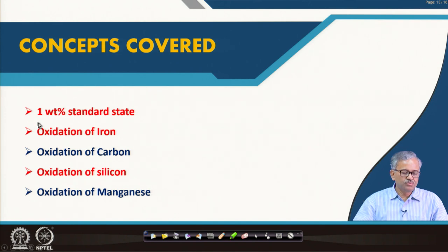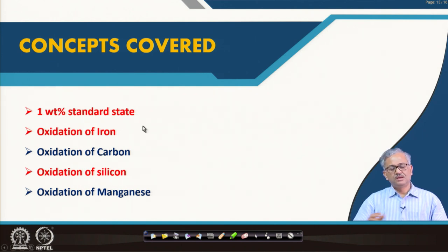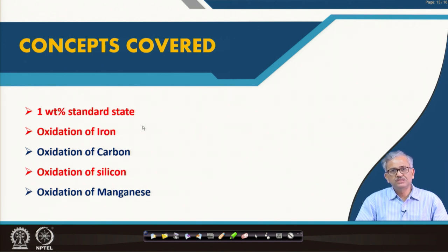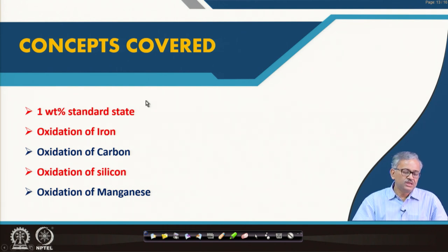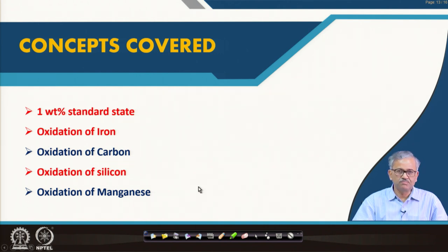The first concept to be covered is the 1 weight percent standard state. When considering reaction equilibrium in liquid steel, the impurity percentage hardly exceeds 1 weight percent. Most impurities are within 1 weight percent, so it is a very dilute solution. If we express the activity of impurities with respect to pure solid at the standard state, the activity value becomes very small, of the order of 10 to the minus 3 or minus 4, which is very inconvenient.